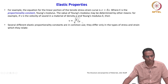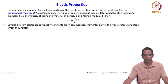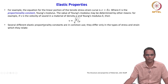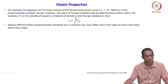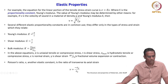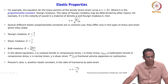We are looking at E here as a proportionality constant as per the linear elastics theory. We are now looking at what are the proportionality constants in terms of elastic behavior. Several different elastic proportionality constants are in common use — they differ only in the type of stress and strain which they relate. This is Young's modulus: E is equal to sigma by epsilon, and shear modulus G is equal to tau by gamma.